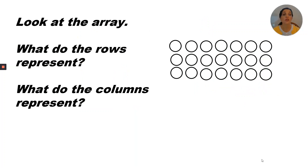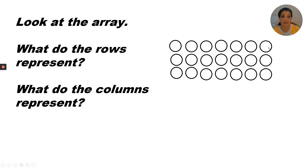Look at this array. What do the rows represent? What do the columns represent? I have three rows, or three groups. And I have seven columns, or seven in each row.